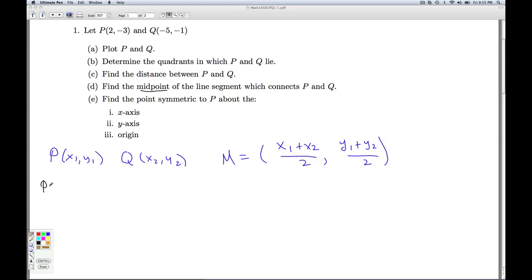So our point P is 2, negative 3. Our point Q is negative 5, negative 1. And so we can make the identification as before. And so we get our midpoint is average the X values, 2 plus negative 5, divided by 2. Average the Y values, negative 3 plus negative 1, divided by 2.